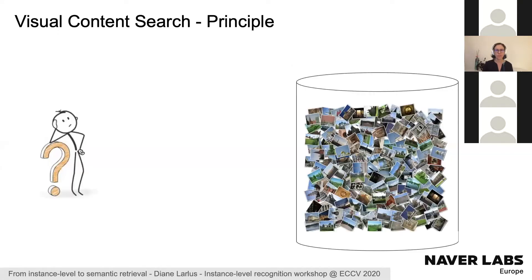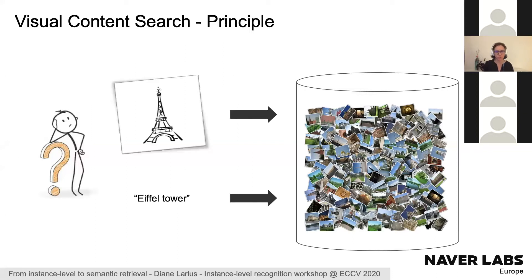First, a little context. When you have a very large collection of images, the most standard way to interact with it is probably by typing text. If you're looking for images of the Eiffel Tower, you'll type that and retrieve those images. Another very standard way is to provide an example image — here, an example of the Eiffel Tower.